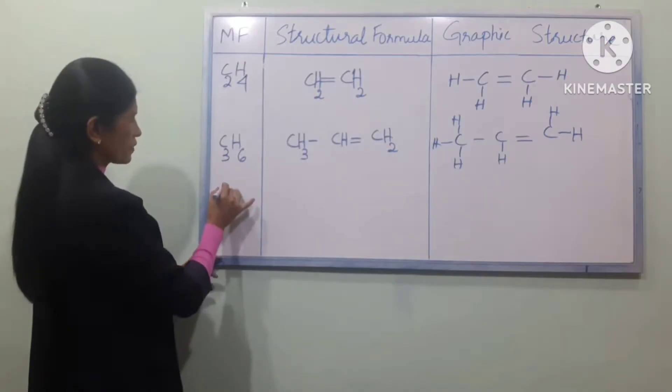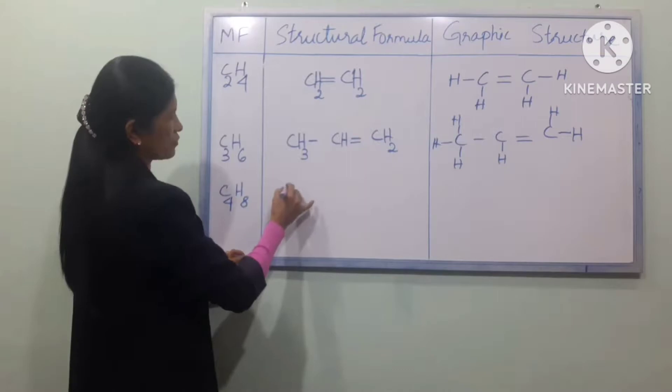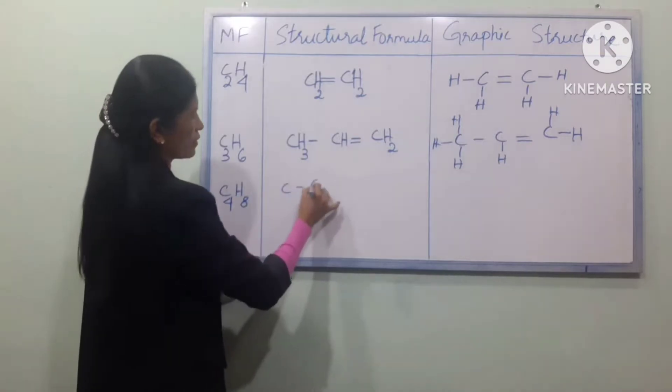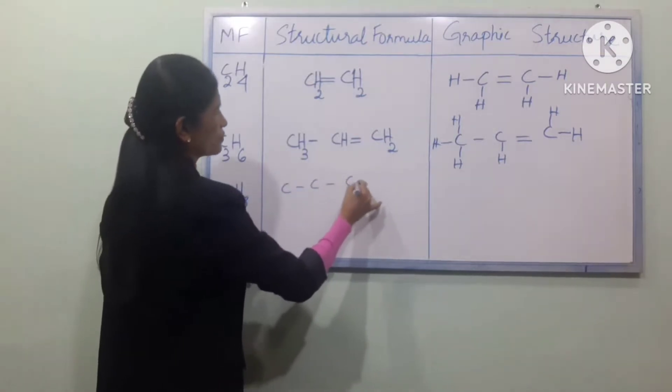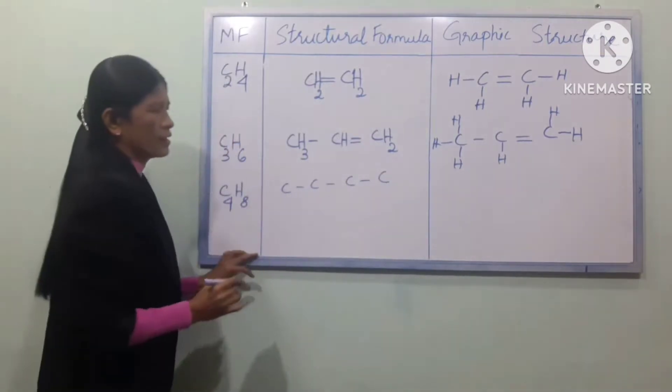This is C4H8. We number the carbons 1, 2, 3, 4.